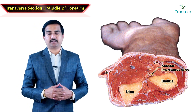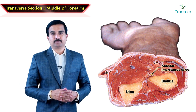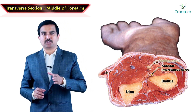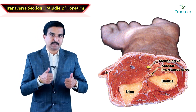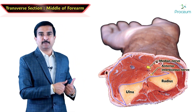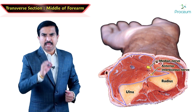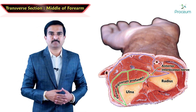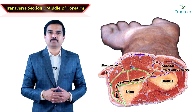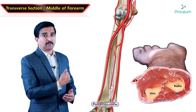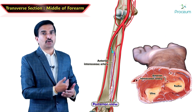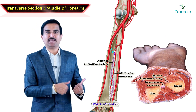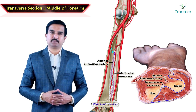The anterior interosseous nerve is the deep branch of the median nerve, which supplies the deep muscles in the flexor compartment except the medial half of the flexor digitorum profundus, which is supplied by the ulnar nerve. In the distal part of the forearm, the anterior interosseous artery pierces the interosseous membrane to reach the extensor compartment.